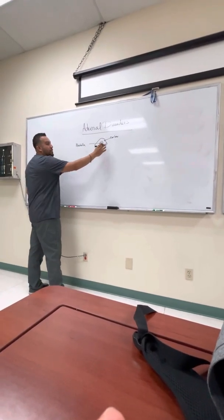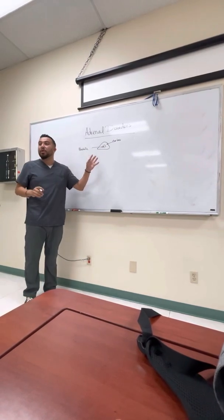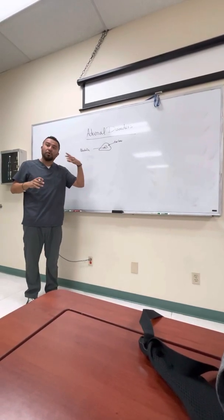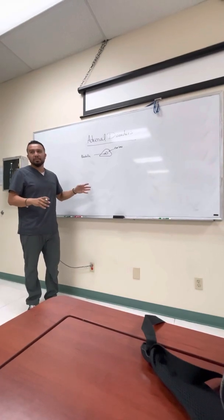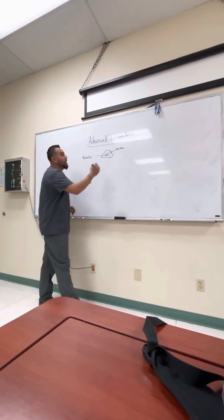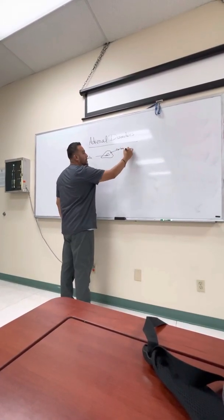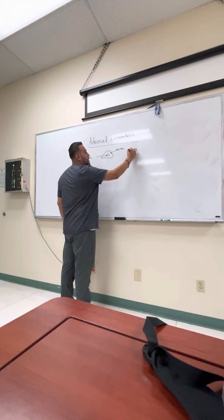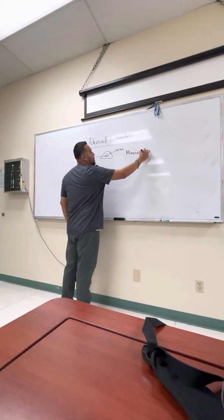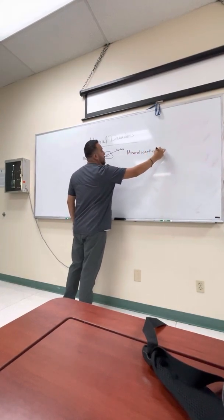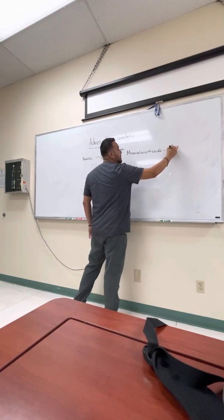Right now I'm going to focus on the cortex. You've got to know what these glands do — when you know what they do, the hormones they secrete, and what those hormones do, the disorder becomes a lot easier. We have three major hormones. The first is mineralocorticoids, and the main one is aldosterone.